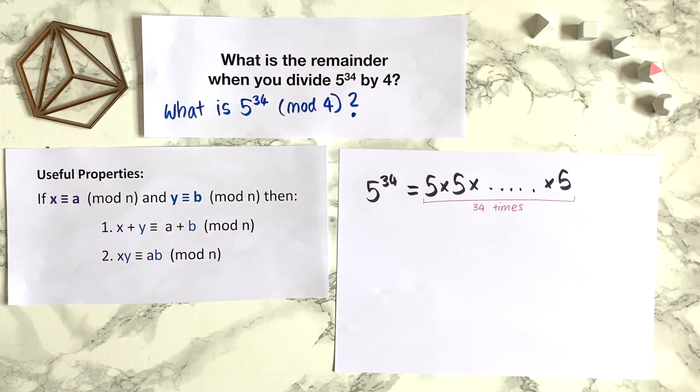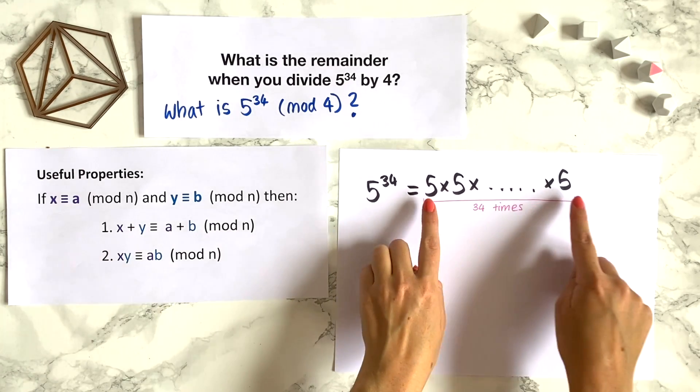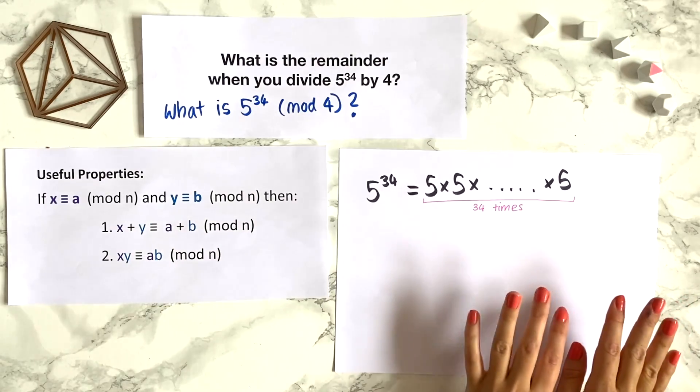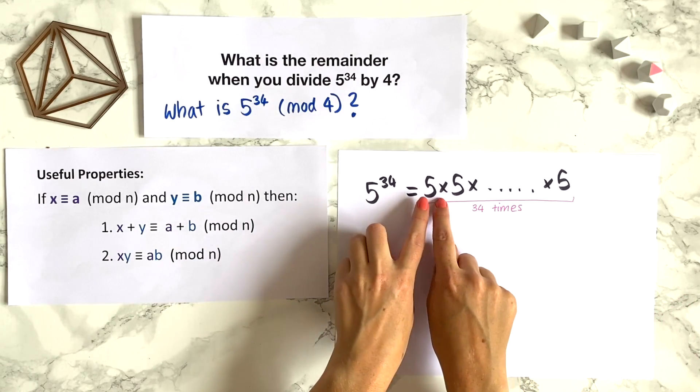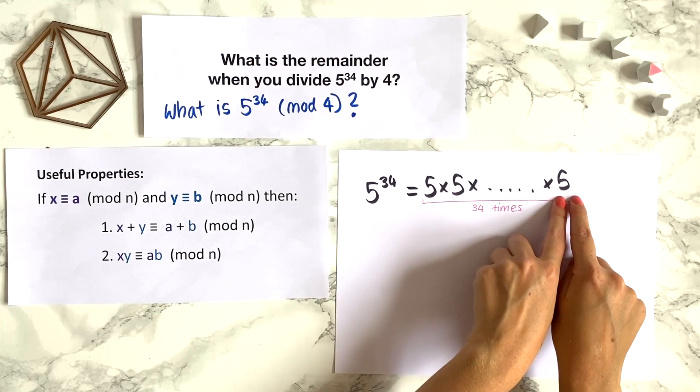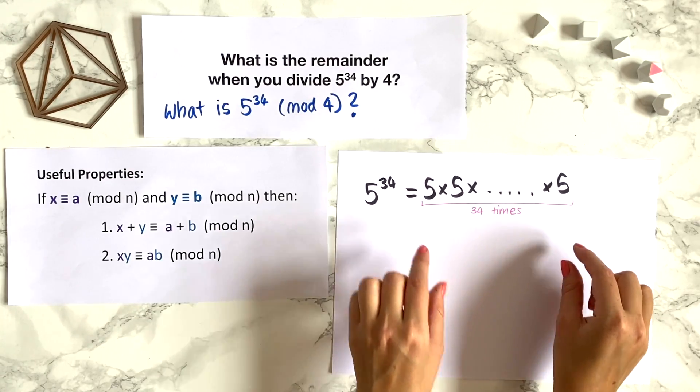And this tells us that instead of evaluating this very big product and then taking it modulo 4, we can take all the components of the product modulo 4 and multiply the result of that together.